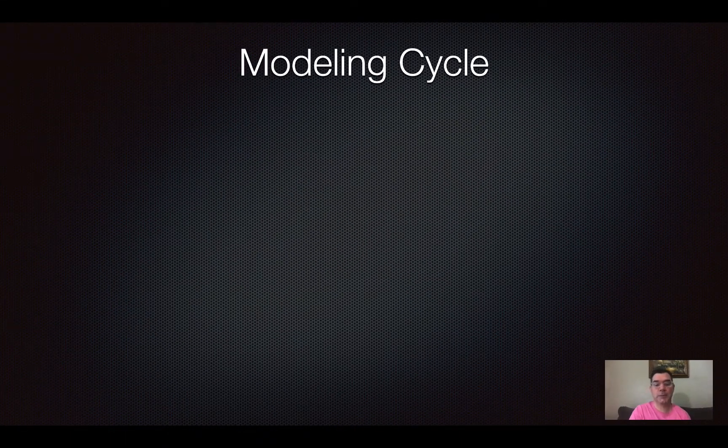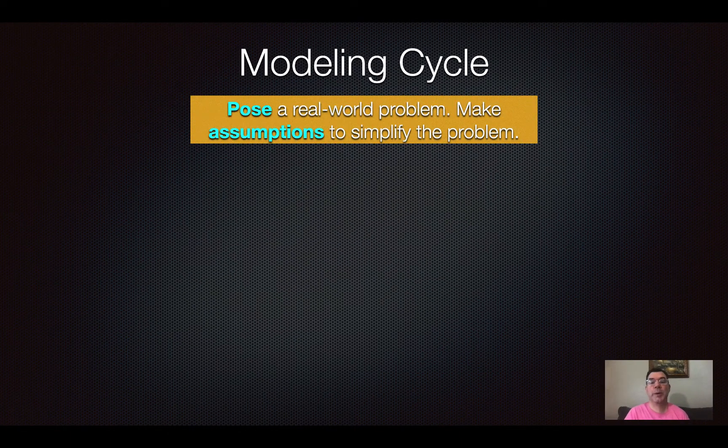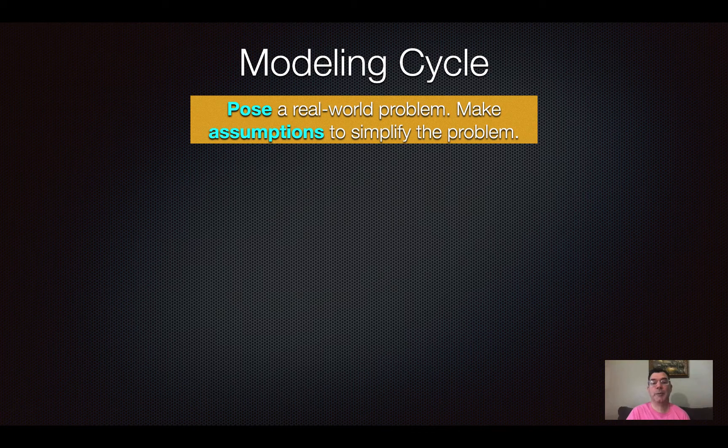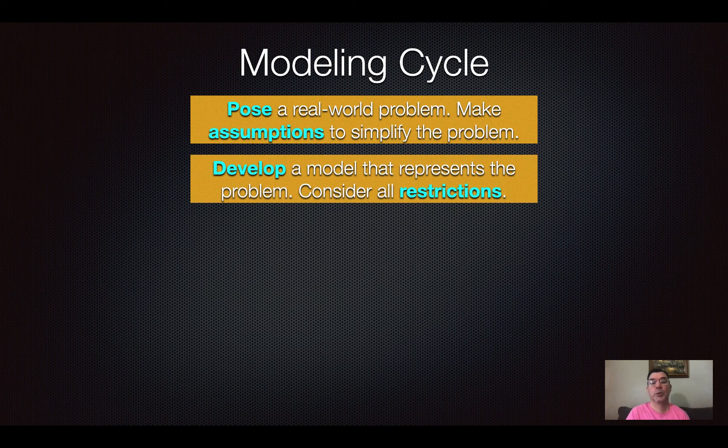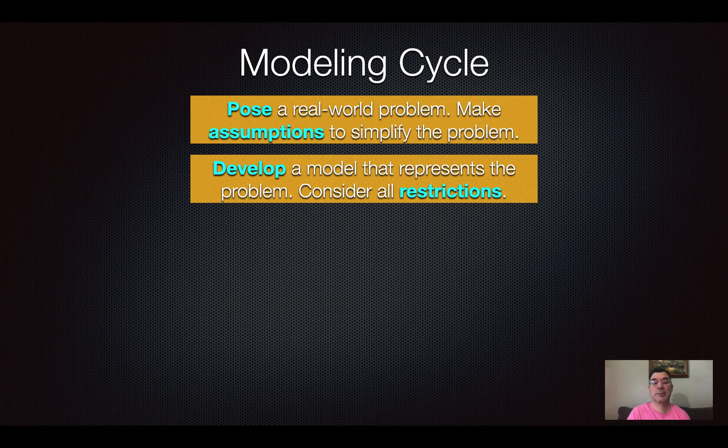So here's the cycle. First we pose a real-world problem and we make assumptions in order to simplify the problem. We develop a model that represents the problem, or we do our best to do that, and we consider any restrictions that might be there.